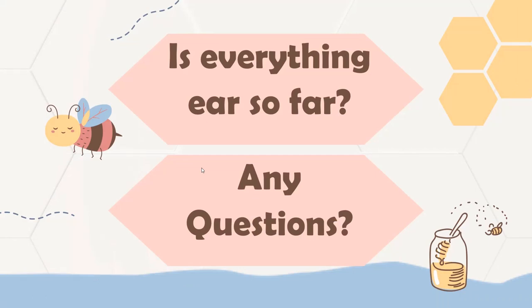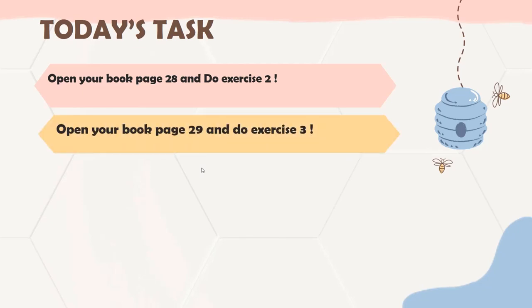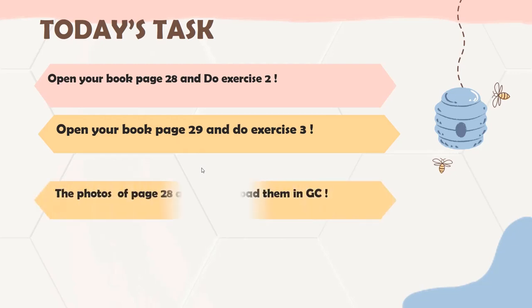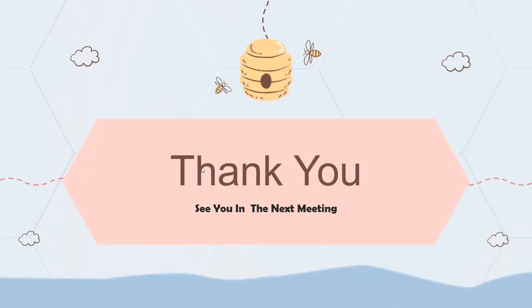Those are for today's lesson. We are going to do the task. If you have any questions, you can ask me by WhatsApp. Today's task: open your book page 28 and do exercise 2 — the listening practice — and page 29, do exercise 3 — write the vocabulary of food and veggies. Take photos of pages 28 and 29, upload them in Google Classroom, and click turn in. Please do the task before today at 7pm. Thank you everyone for joining the English lesson today! See you in the next meeting — we are going to have Google Meet on Monday. Bye bye!